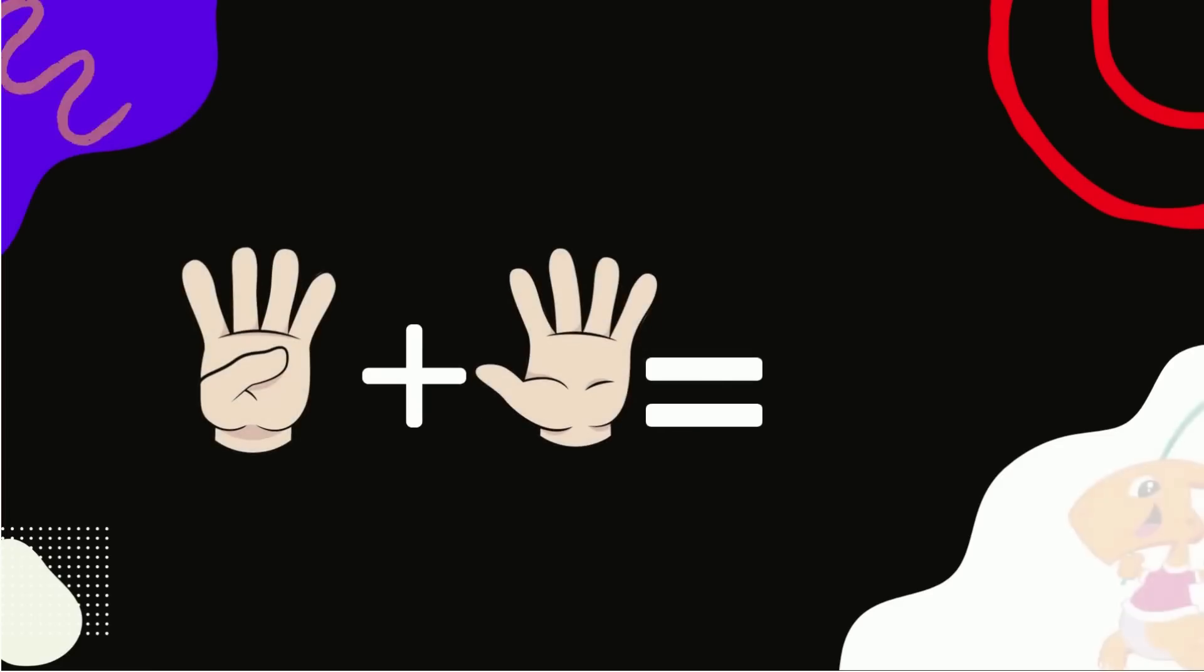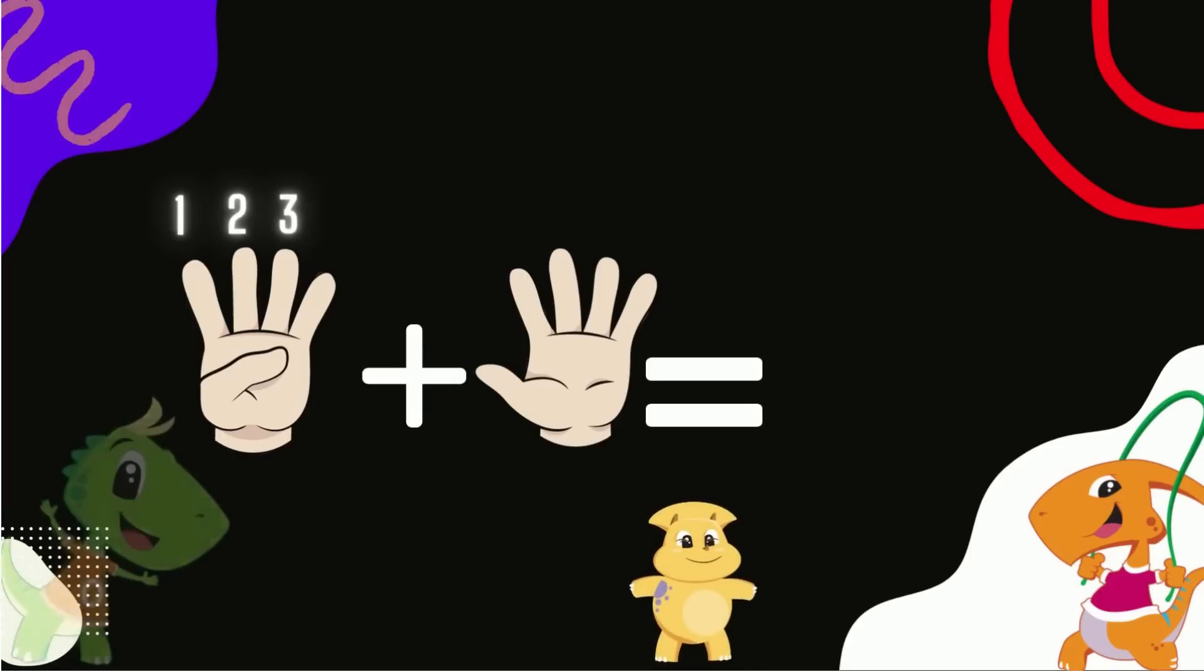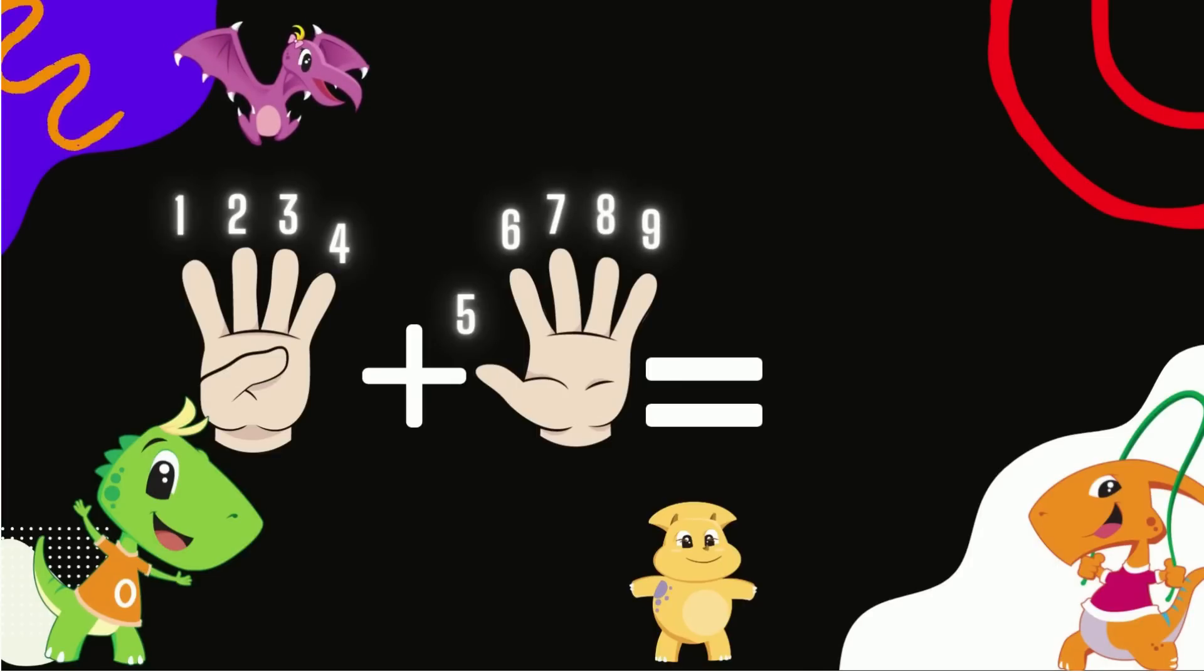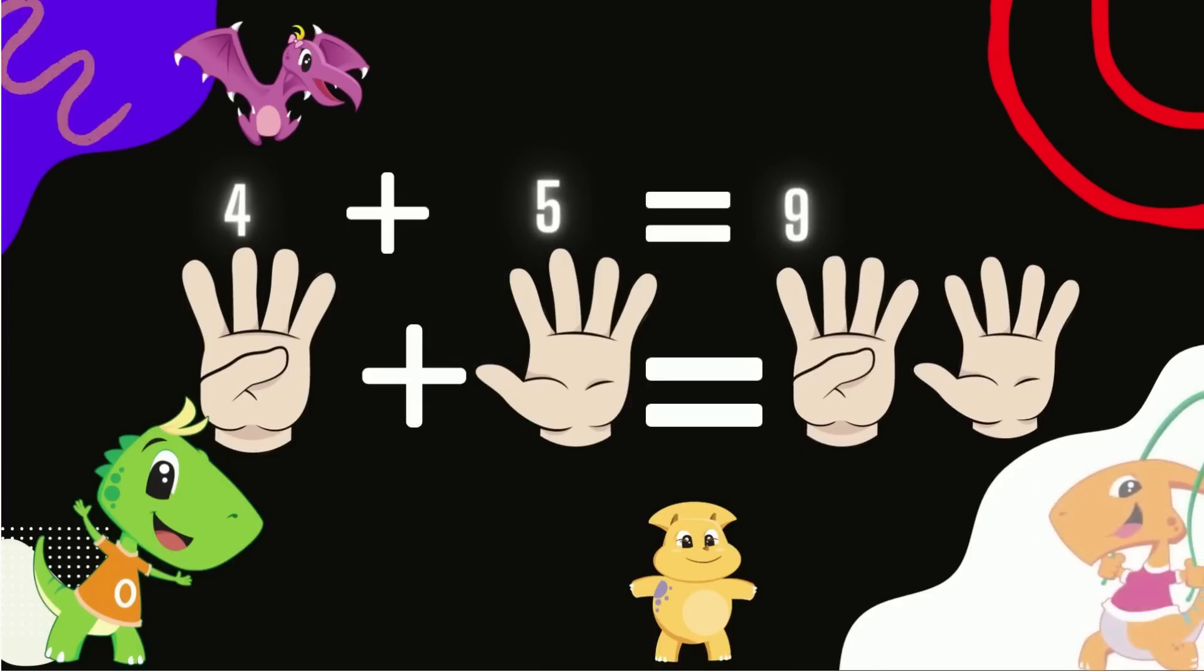Let's take four fingers out in one hand and five fingers out in the other hand. So we have one, two, three, four, five, six, seven, eight, nine. Four add five equals nine.